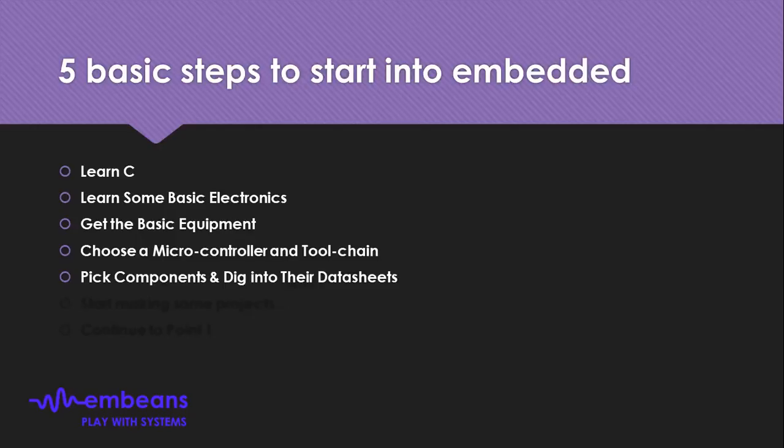Now you have enough to actually get started. Pick some components and put them together. Good places to look for components are SparkFun or Adafruit, and for a broader and cheaper selection, Digi-Key and Mouser are also available. Once you have found a few components for your project, look into their datasheets. Datasheets are essentially the manuals for electronic components — made by the manufacturers — and they are the key to figuring out how to use a component and make it work for your application.